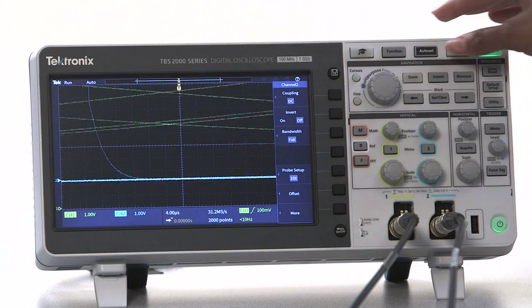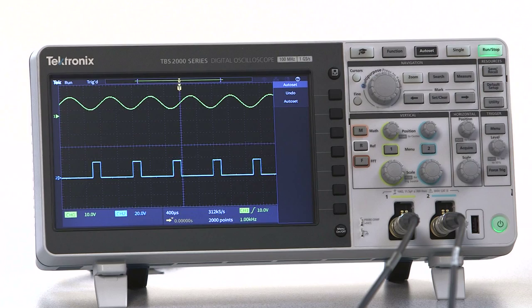Sometimes you can get away with cheating thanks to AutoSet. It uses the processing power in the scope to try and fit signals in the display. But you're not off the hook. Every engineer needs to know how to set up probes and how to make manual oscilloscope adjustments.